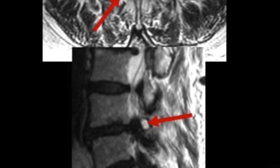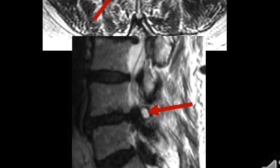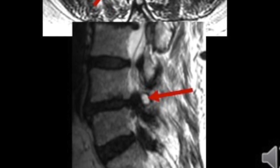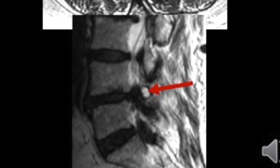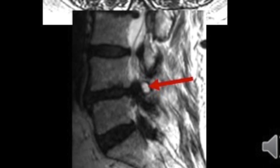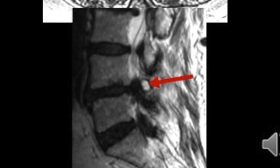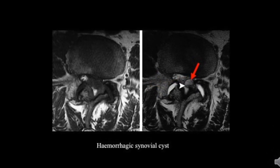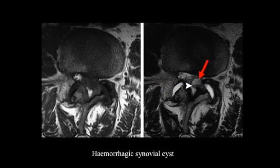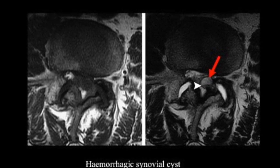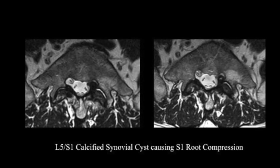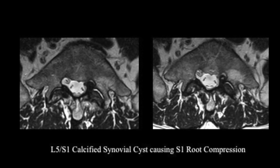On axial sections we might miss the synovial cyst if the imaging planes are not planned correctly. If a synovial cyst is identified on a sagittal image, the axial reference line should be planned to pass through it. An example of a hemorrhagic synovial cyst shows significant lateral recess narrowing and nerve root compression. Another example demonstrates a calcified synovial cyst causing S1 nerve root compression.